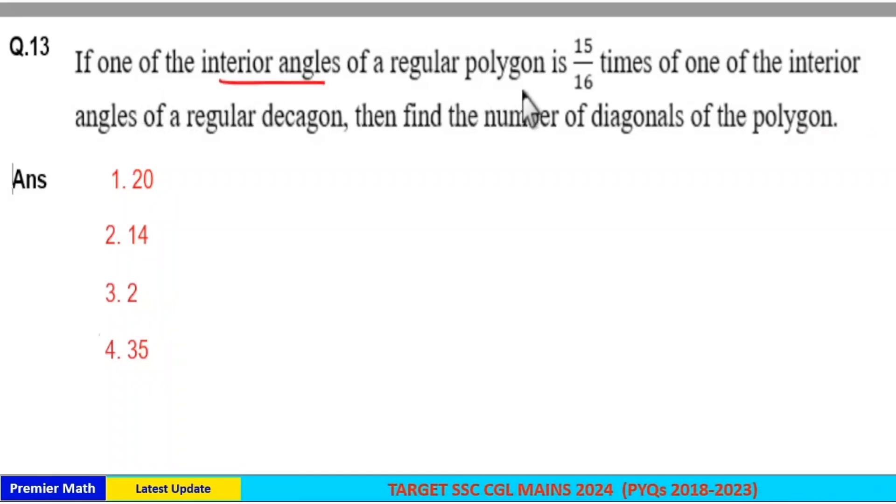If one of the interior angles of a regular polygon is 15/16 times one of the interior angles of a regular decagon, then find the number of diagonals of the polygon.